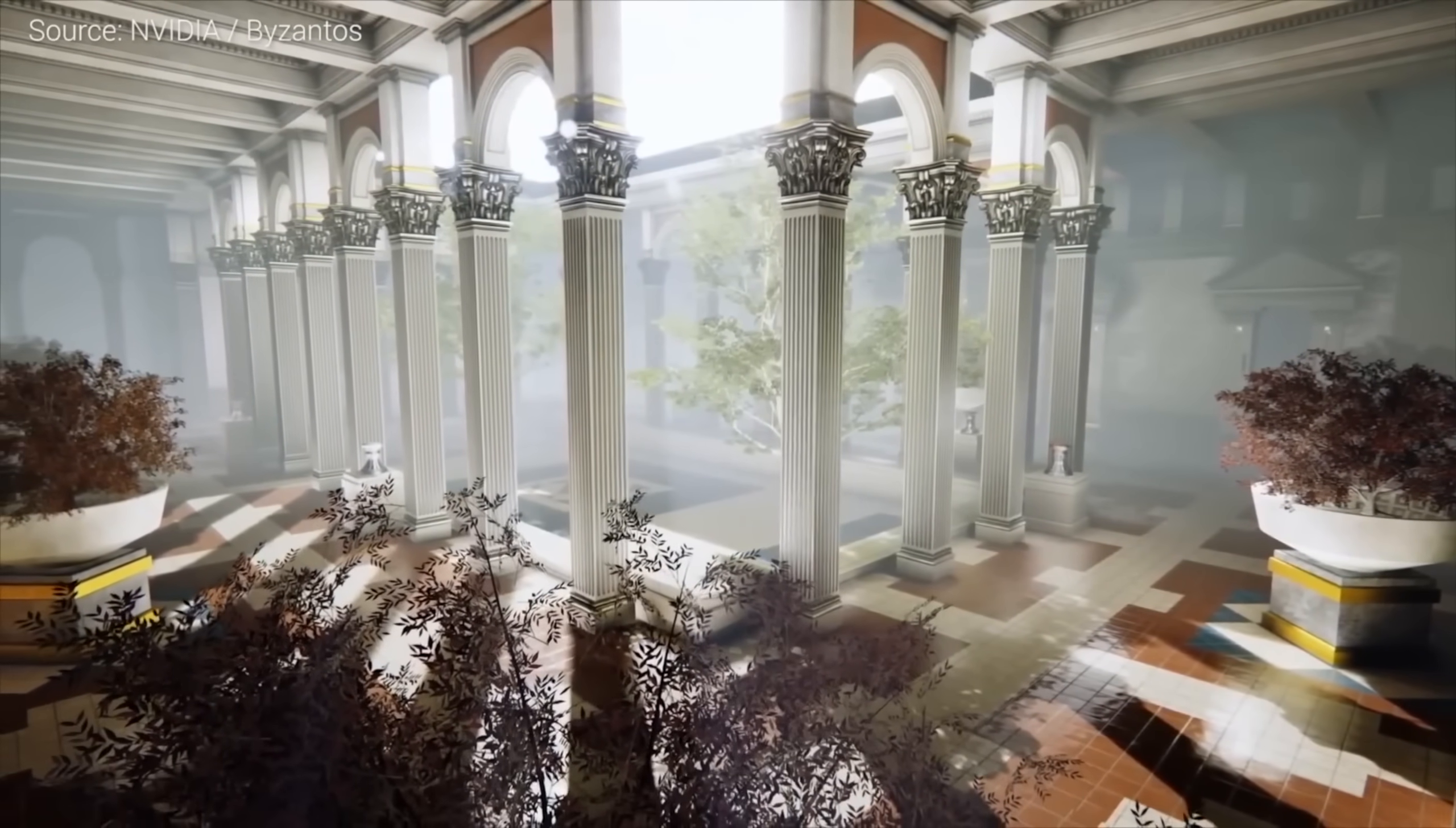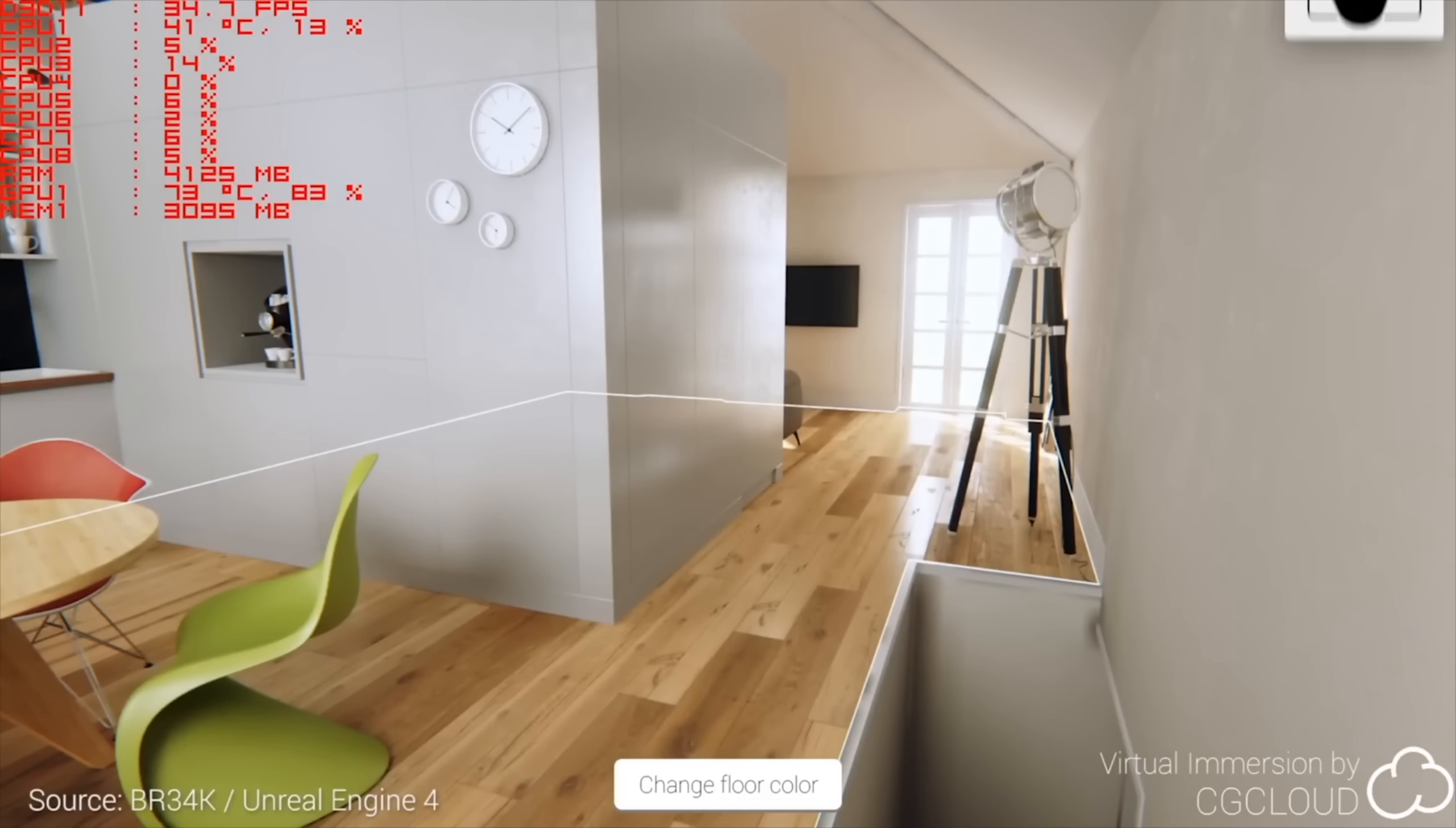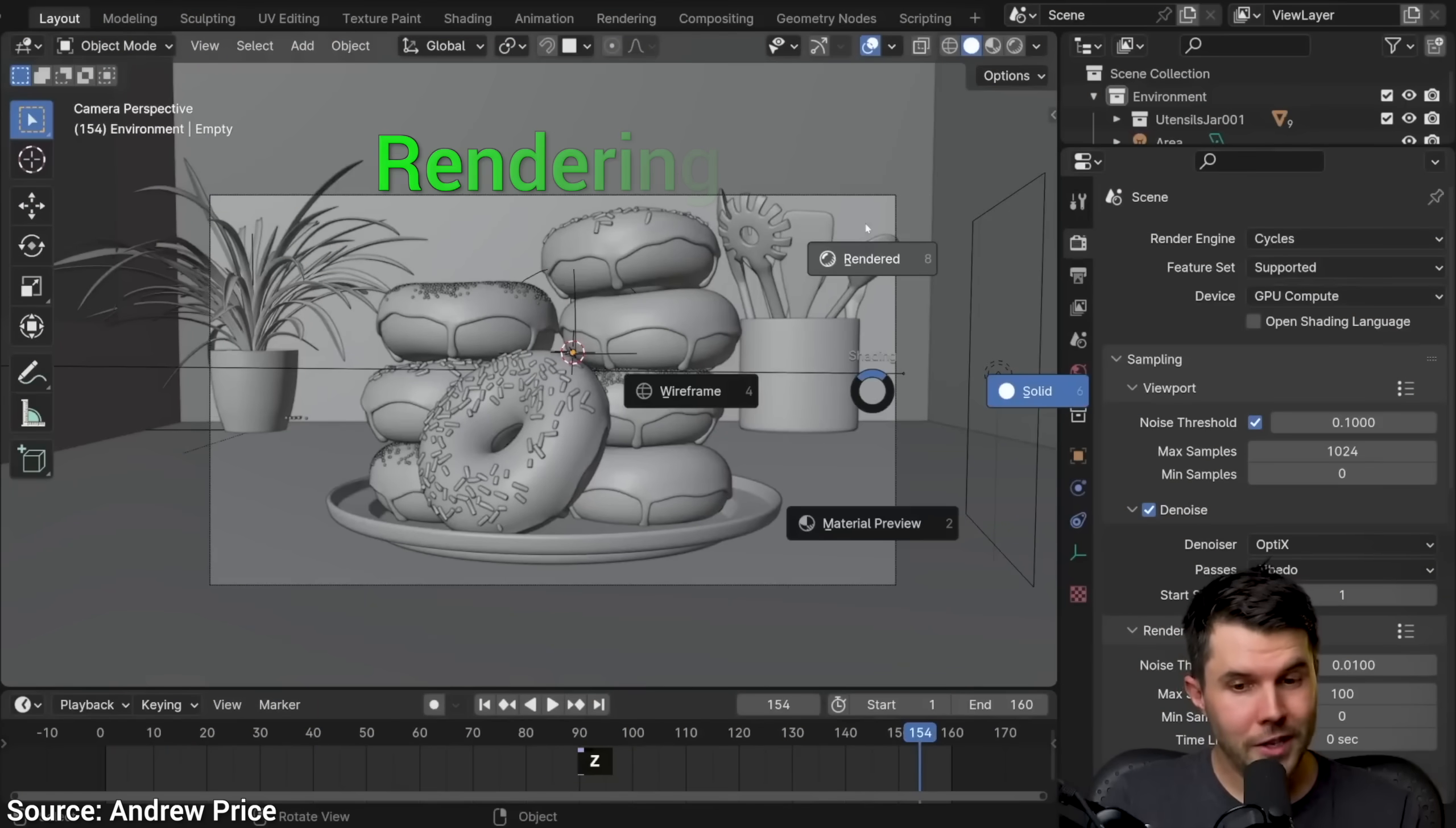In computer games and animation movies, we have a 3D scene with objects and materials, and we wish to see an image, how it would look in reality. That is called rendering.